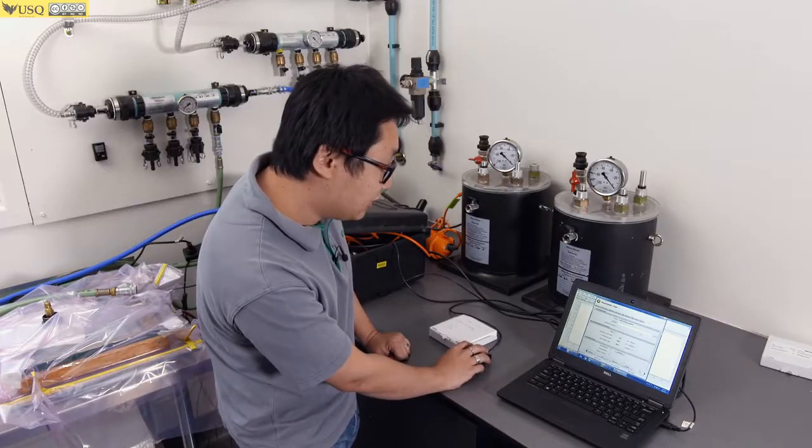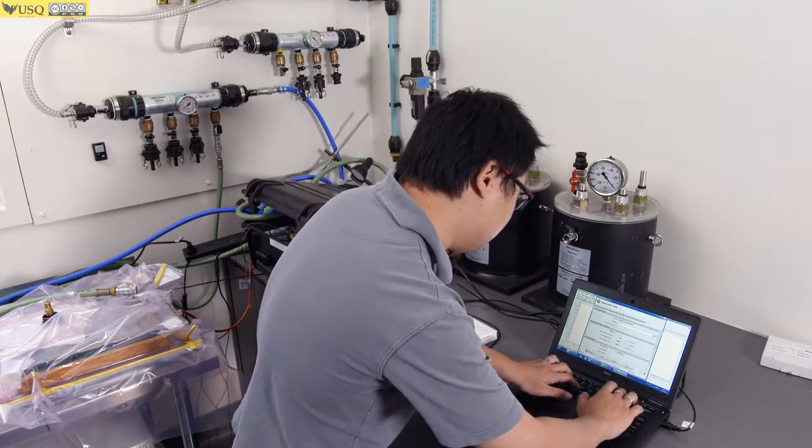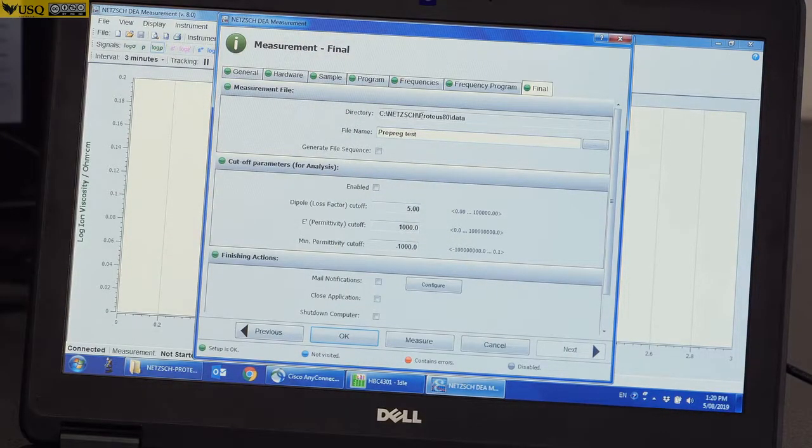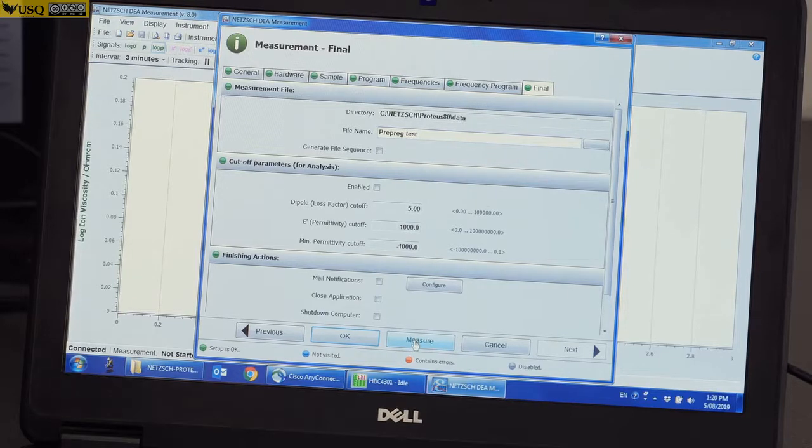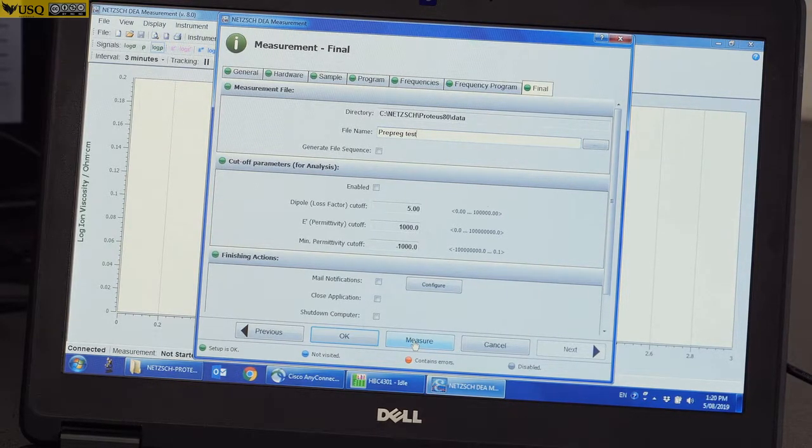This shows you the programs that we have set up in our program tab and also frequency. Next, it'll ask you to save your name. I'll put this as a prepreg test. Once this is ready, we can have a look at the prepreg setup and then we can start the measurement.